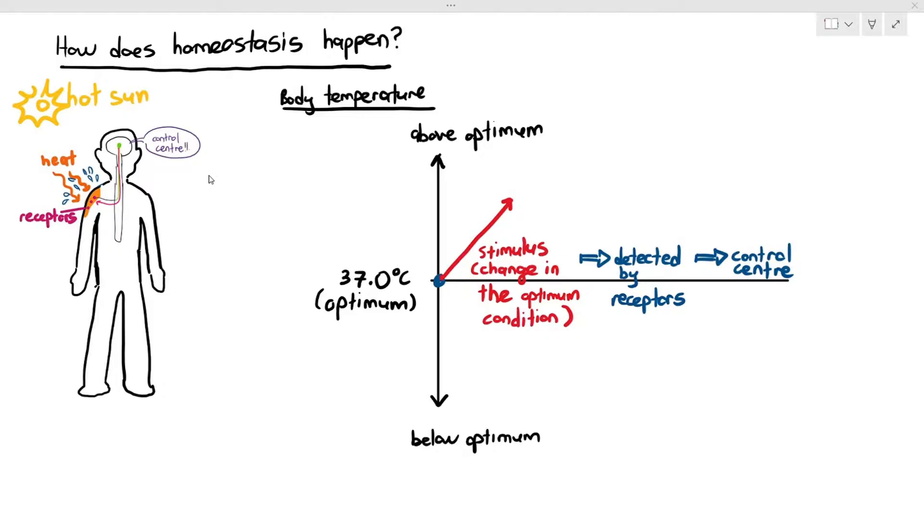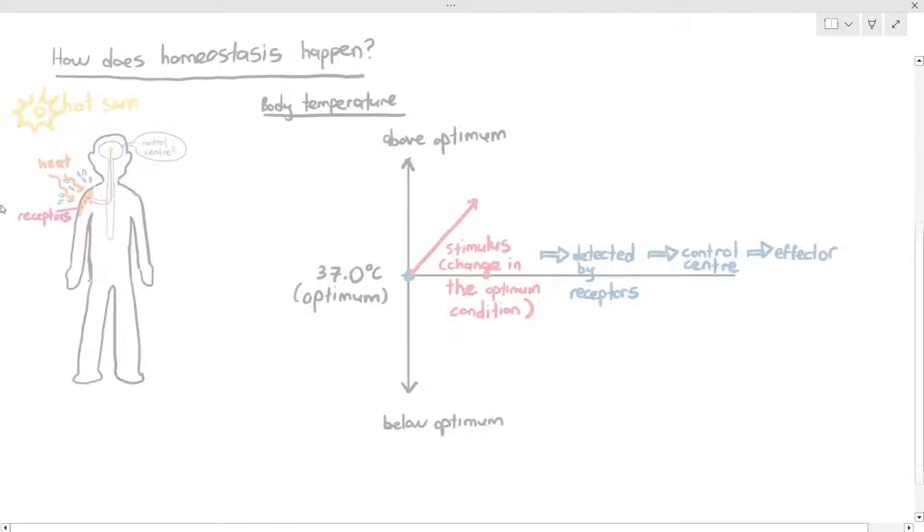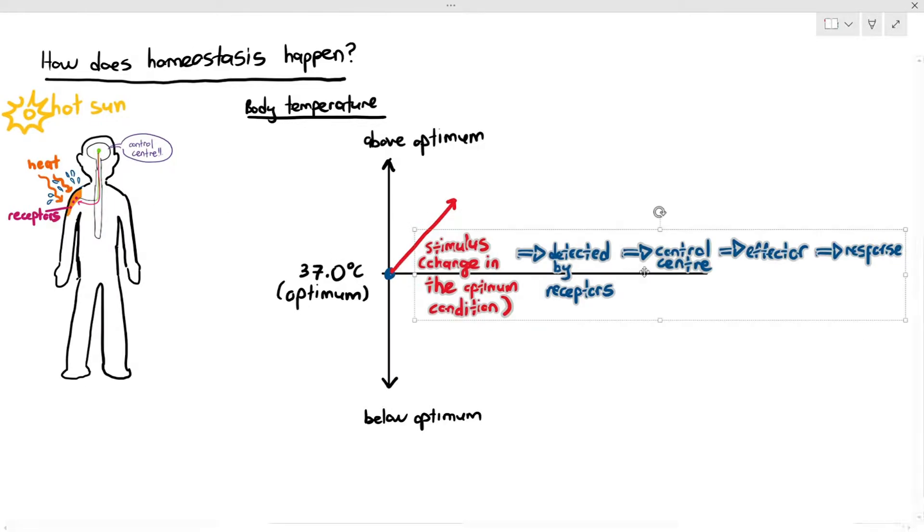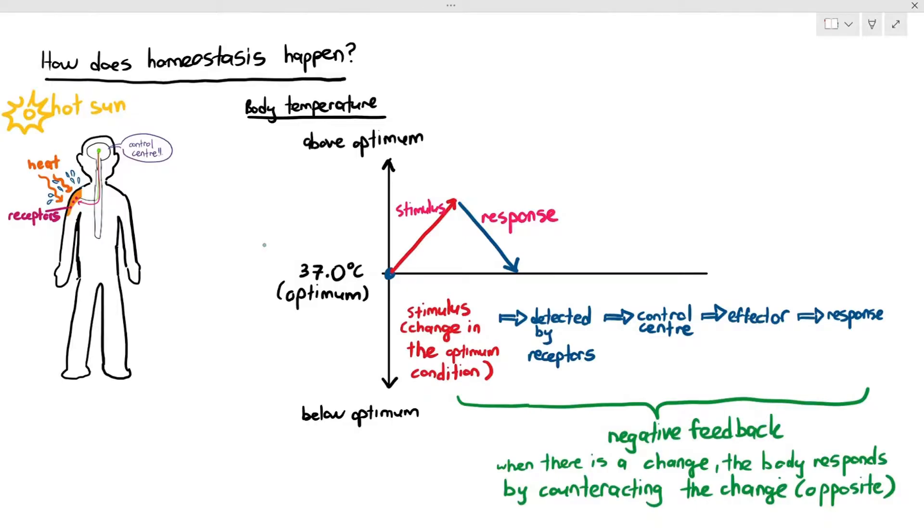The control center will then send another signal to the effector. Effectors are just parts of the body that will produce a response. As an example, the response in this case was sweating. And look at what happens. The stimulus caused the body temperature to increase. The stimulus was the heat in this case. The response by sweating will cause the body temperature to go back to the optimum level. This is known as something called negative feedback. Negative feedback just means that when there is a change, the body responds by counteracting the change in the opposite direction. So the change was the stimulus going up and the response was making it go down.